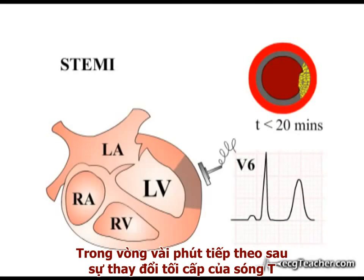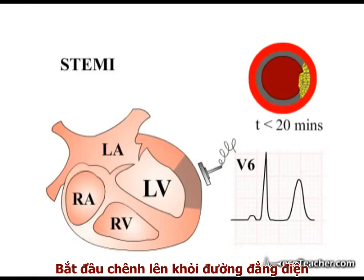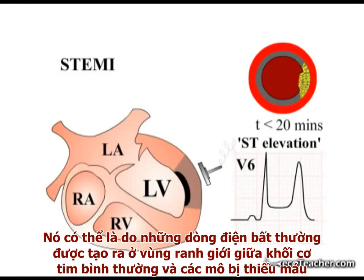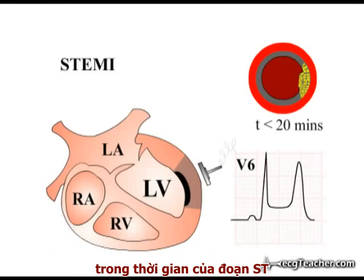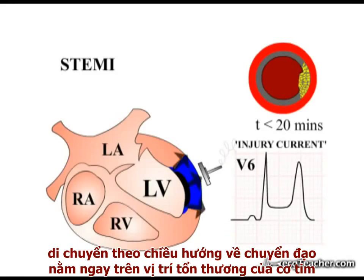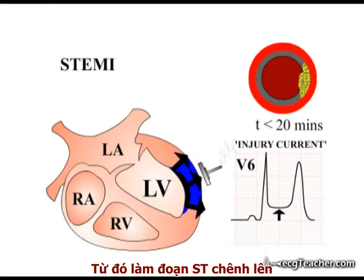In the minutes following hyperacute T wave changes, the ST segments in leads overlying the myocardial region deprived of arterial blood supply begin to rise above the isoelectric line. The mechanism underlying this ST elevation is poorly understood. It may be due to abnormal currents generated between normal and ischemic tissue during the time period of the ST segment. This so-called injury current moving towards the leads overlying the damaged region of myocardium would be expected to produce a positive deflection in their readouts, raising the ST segments.